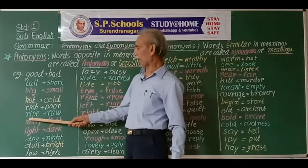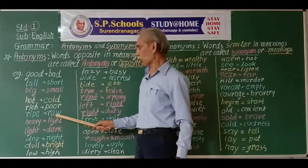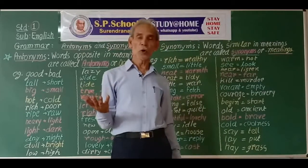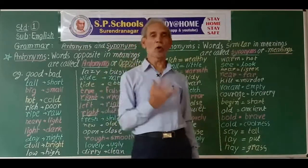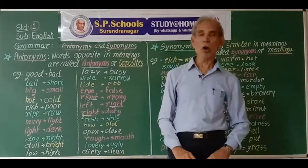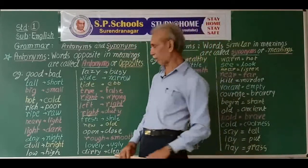Right and wrong are opposites. Right means correct, and wrong is that which is not right.